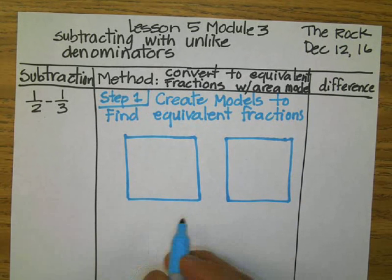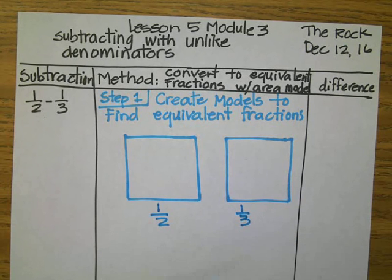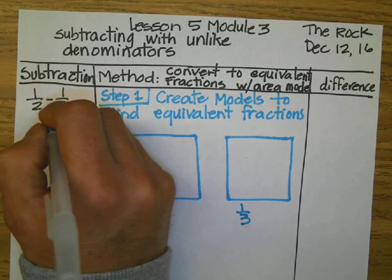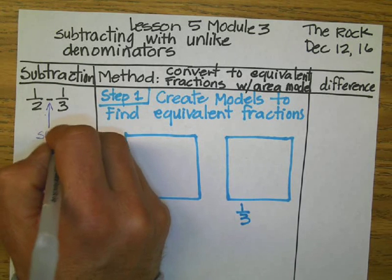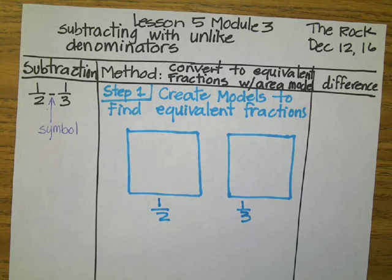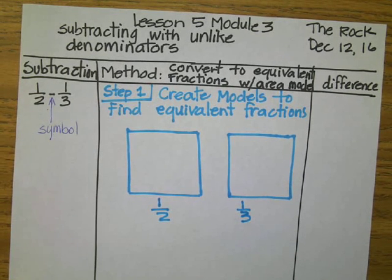Our first fraction is one-half, and our second fraction is one-third. So we have to subtract them. My friends, it's really important that you always pay attention to the symbol. That way, you will know if it's an addition or a subtraction. A common error by my students is they sometimes don't see it, and they add or do other things that will give them the wrong answer.